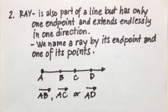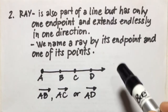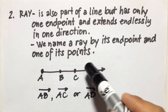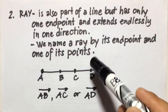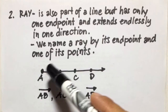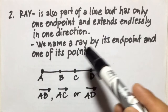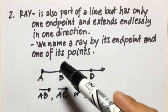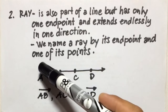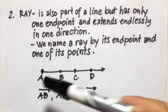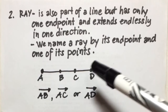Again, when naming a ray, we always start at its endpoint, not on the other points. For example, we cannot name this ray as ray BA, ray CA, or ray DA. We must start with the endpoint, which is A. So the correct names are ray AB, ray AC, or ray AD.